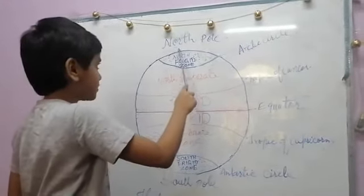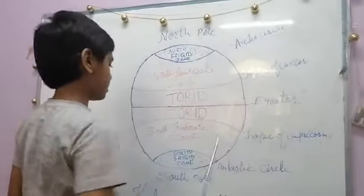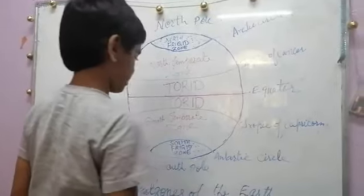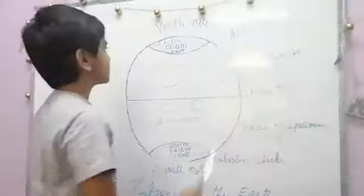North Widget zone lies between North Pole and Arctic Circle. South Widget zone lies between South Pole and Antarctic Circle. With that, we see this Widget zone.